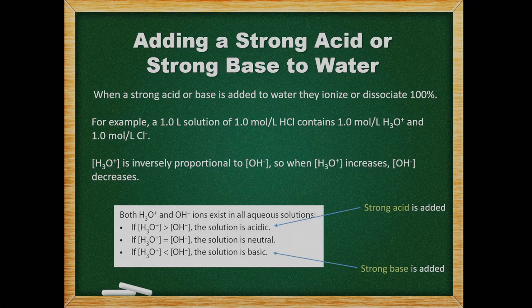When a strong acid or base is added to water, they ionize or dissociate 100%. For example, a 1 liter solution of 1 molar hydrochloric acid contains 1 mole of hydronium ions and 1 mole of chloride ions. The concentration of hydronium is inversely proportional to the concentration of hydroxide ions. When the concentration of hydronium ions is greater than the concentration of hydroxide ions, the solution is acidic. When the concentration of hydroxide ions is greater, the solution is basic. Finally, when the two concentrations are equal, the solution is neutral.